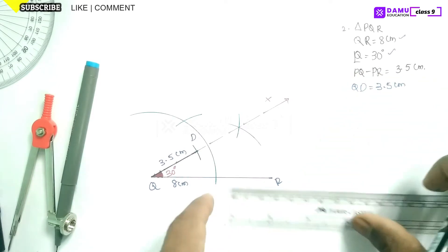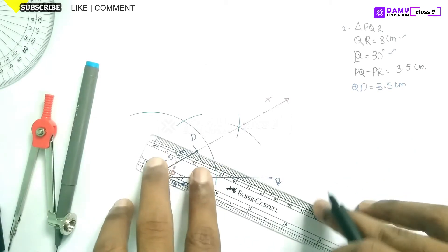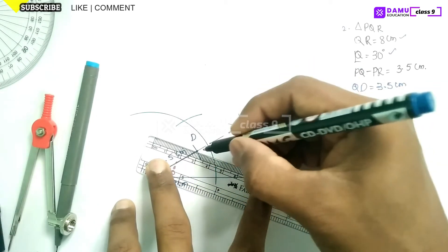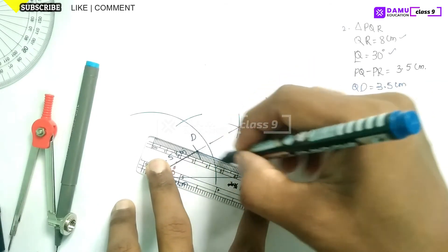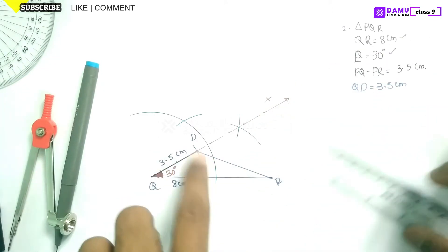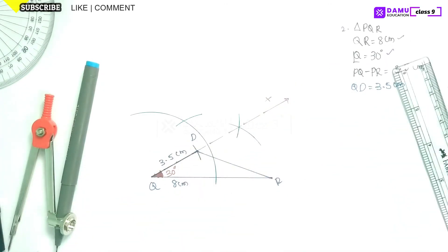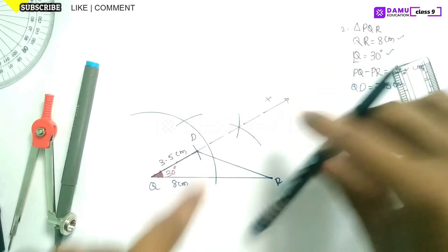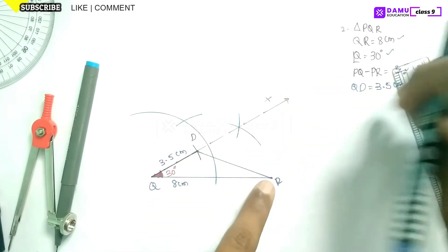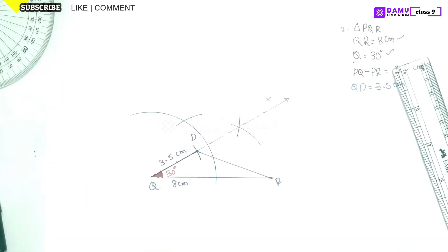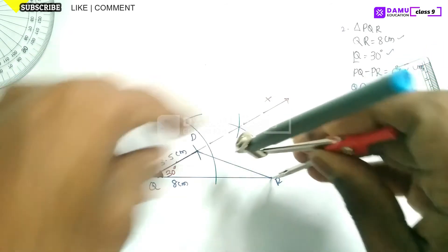Now join D to R. We have now constructed triangle QDR. Next, we need to draw the perpendicular bisector of DR — not the angle bisector, but the perpendicular bisector.